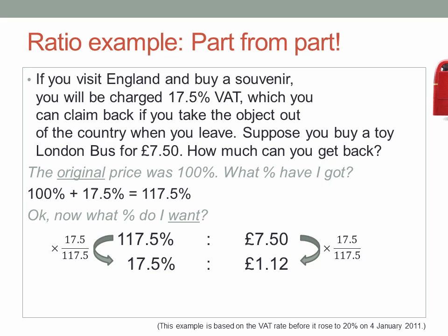7.5 times 17.5 over 117.5 gives me £1.12. Round it off to two decimal places, as usual.